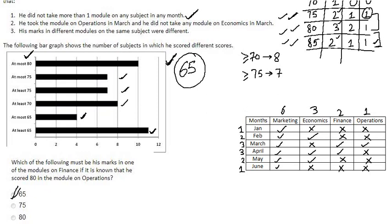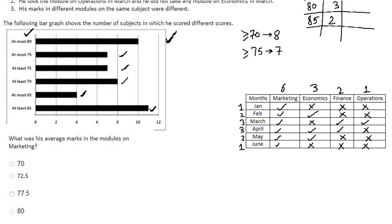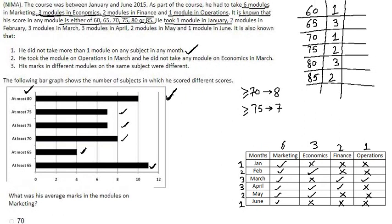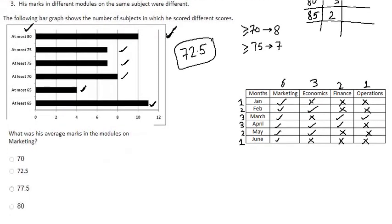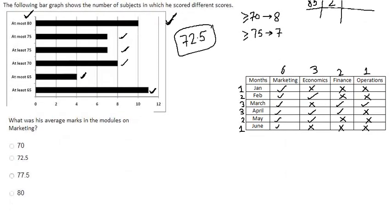Question 3: What was his average marks in the modules on marketing? There were 6 modules in marketing and his marks are 60, 65, 70, 75, 80 and 85. The average will be 72.5. That is our answer, which is option B.